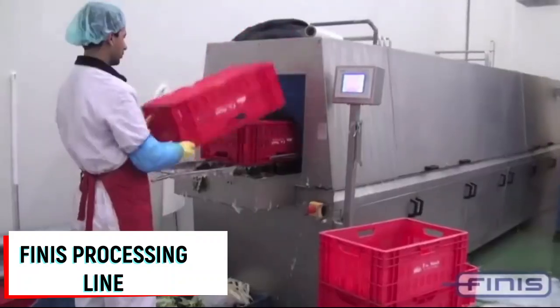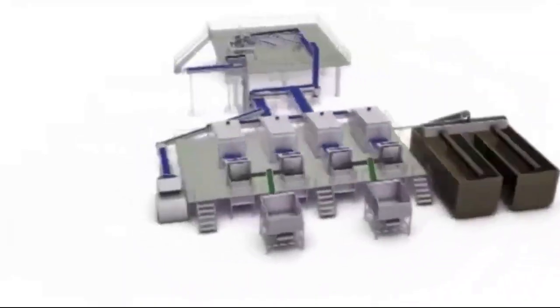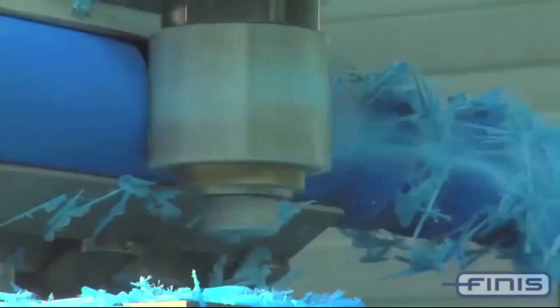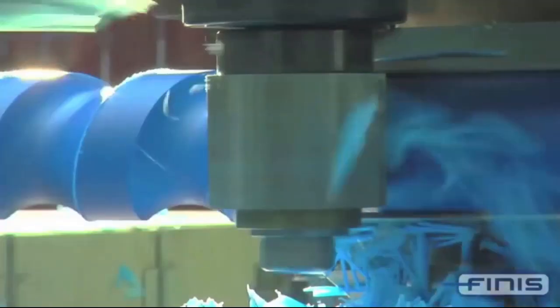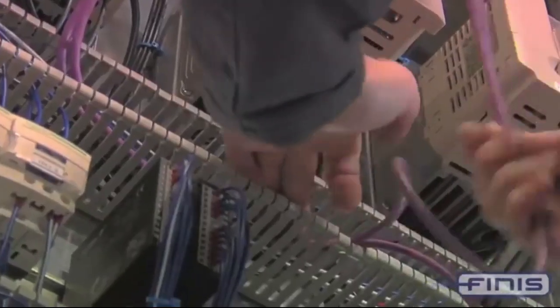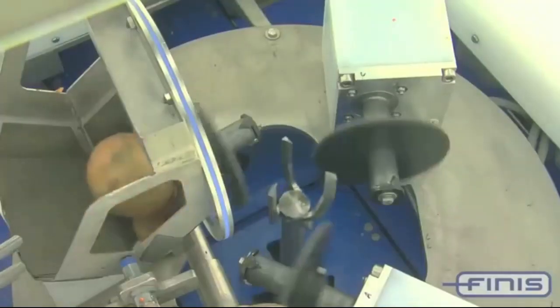Finis processing line. Onions aren't easy to peel, even when you're cooking at home, so of course if you need to peel them for industrial needs, specialized equipment is used. The machine you see on the screen is produced by the Dutch company Finis. This is a processing line for vegetables, covering the whole process all the way to the final packaging.